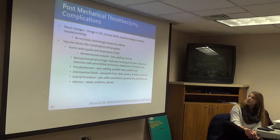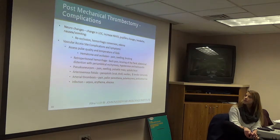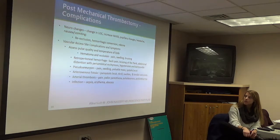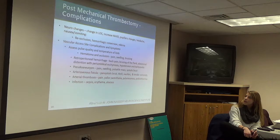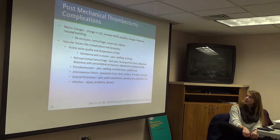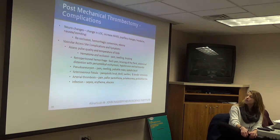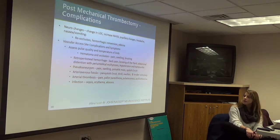Neurological complications to monitor for include change in level of consciousness, increase in NIH score, pupillary changes, sudden headache, nausea, or vomiting — these can be signs of reocclusion, hemorrhagic conversion, or cerebral edema. Vascular site complications include hematoma or occlusion detected by checking pulse equality and limb temperature. Retroperitoneal hemorrhage signs: back pain, flank bruising, abdominal distension, periumbilical ecchymosis, hypotension, and tachycardia. Pseudoaneurysm: pain at the groin, swelling, pulsatile mass, and systolic bruit. Arteriovenous fistula: pansystolic bruit, thrill, swollen tender extremity. Arterial thrombosis: leg pain, pallor, paresthesia, and pulselessness. Also monitor for infection signs including inflammation, sepsis, abscess, or erythema.